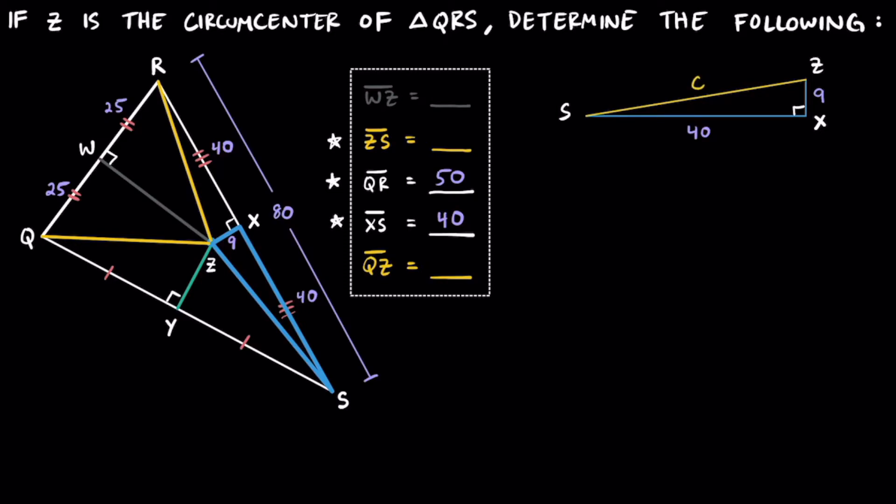Remember, the two legs or the two shorter sides of a right triangle always meet at 90 degrees. Writing this out, we would have 40 raised to the second power plus this 9 raised to the second power, and that's going to be equal to C raised to the second power, or C squared.